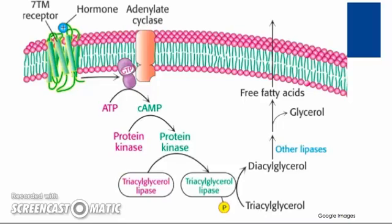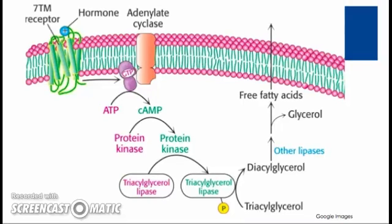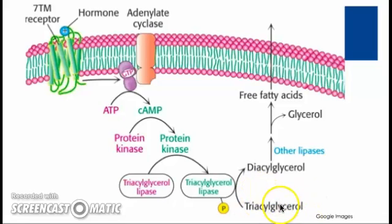Prior to undergoing beta-oxidation in the liver or the muscle cell, it will be important to liberate a free fatty acid molecule from a triacylglycerol stored in the adipocyte. In this diagram portraying the series of events occurring in an adipocyte, there are a series of steps involved in activating the enzyme triacylglycerol lipase, which begins the process of removing each of the three free fatty acids from a triacylglycerol molecule. You see here triacylglycerol being converted to a diacylglycerol, and then a monoacylglycerol liberating the free fatty acids.